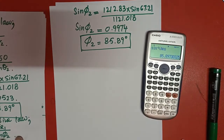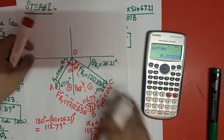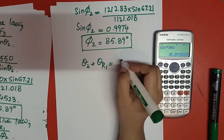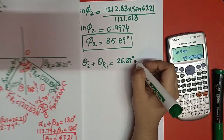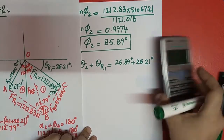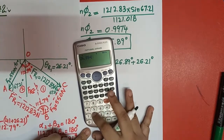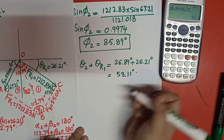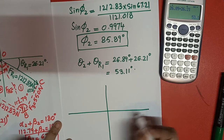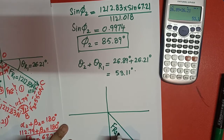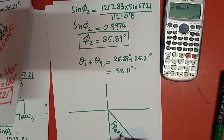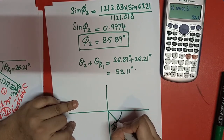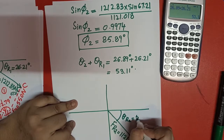We add theta 2 and theta R1: 26.89 + 26.21 = 53.11 degrees. So theta R2 = 53.11 degrees. Therefore FR2 = 1121.018 Newton at theta R2 = 53.11 degrees.